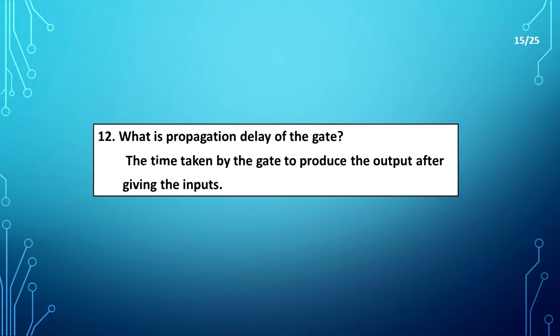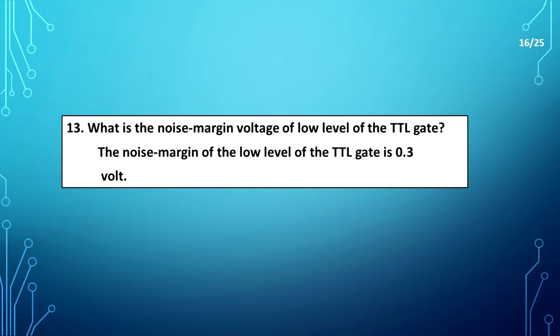What is propagation delay of the gate? The time taken by the gate to produce the output after giving the inputs. What is the noise margin voltage of low level of the TTL gate? The noise margin of the low level of the TTL gate is 0.3V.